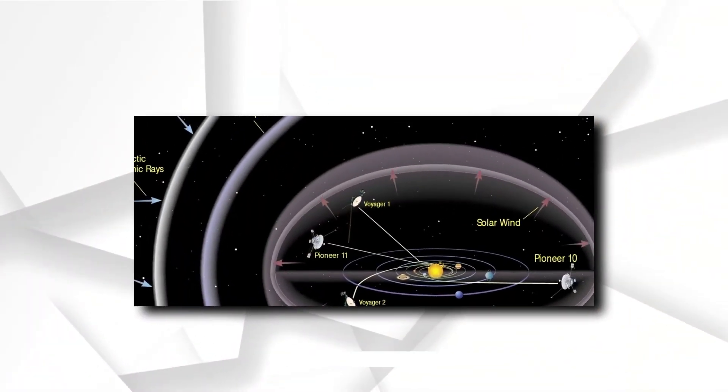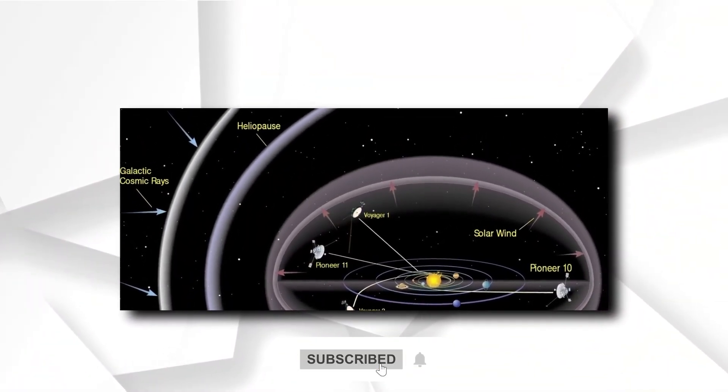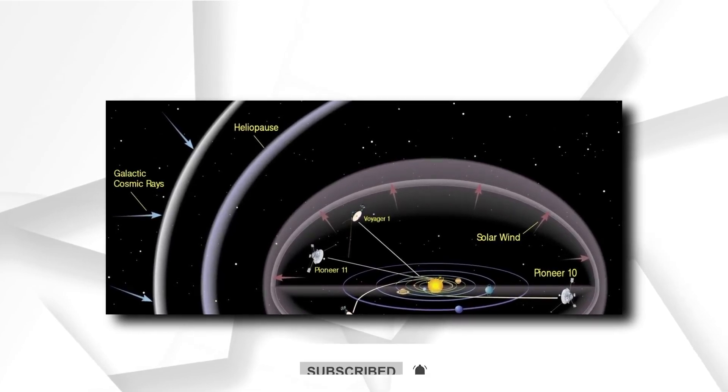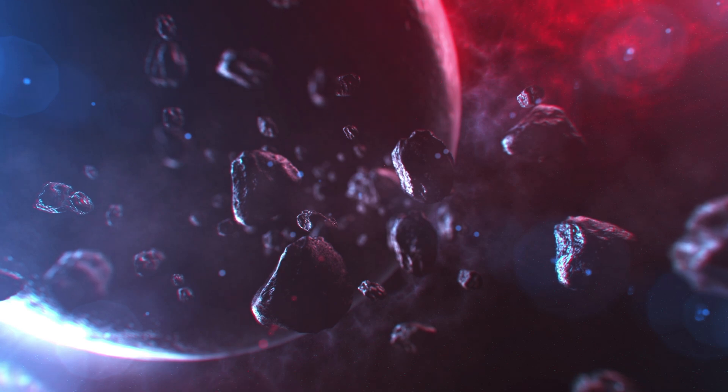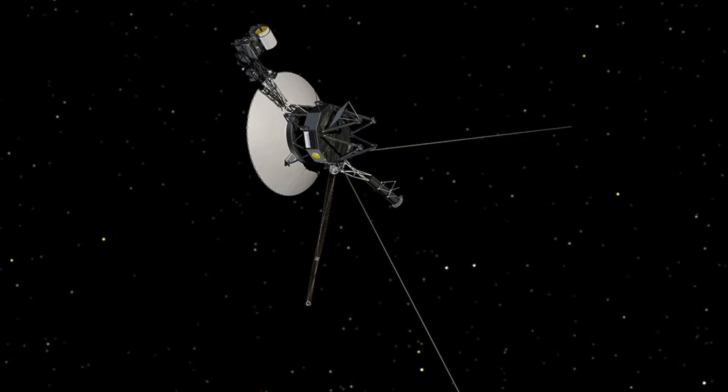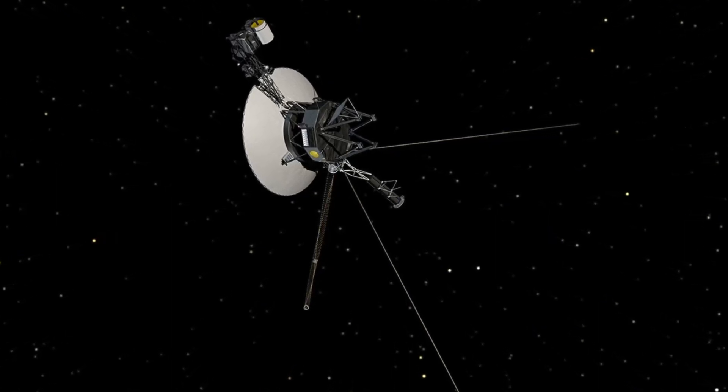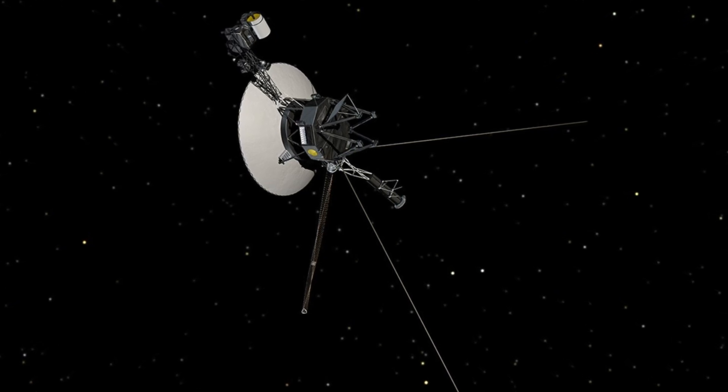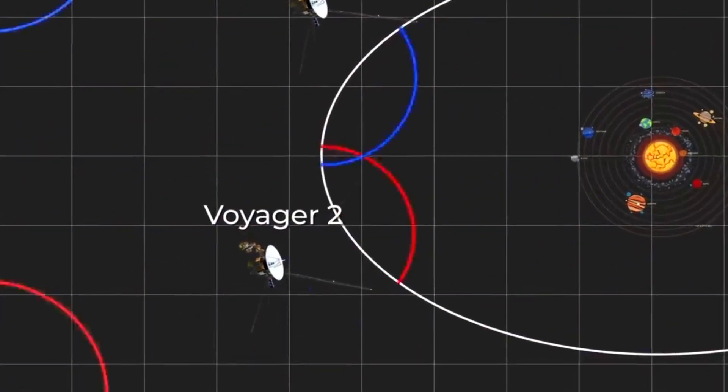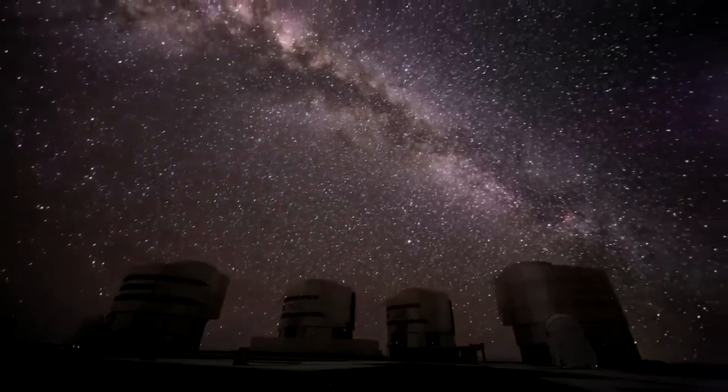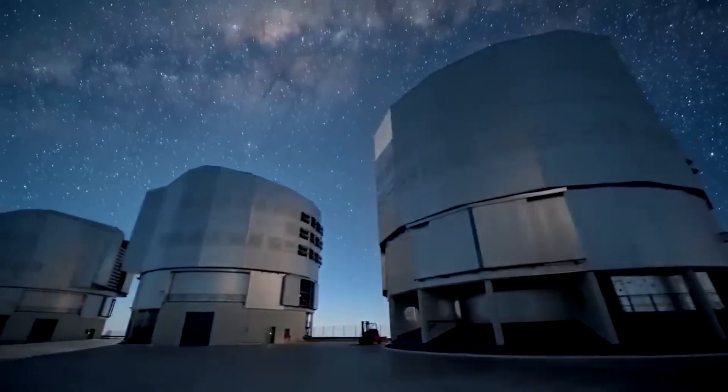On November 5, 2018, the probe entered interstellar space at a distance of 122 astronomical units, or 11.3 billion miles, or 18.3 billion kilometers, about 16.58 light-hours from the Sun, and was traveling at a relative speed of 15.341 km per second, or 34,320 miles per hour.